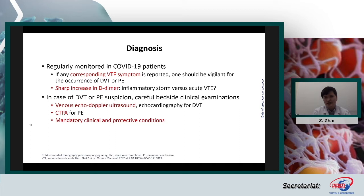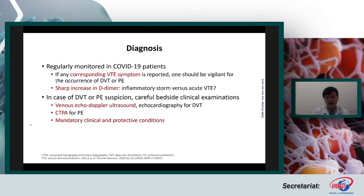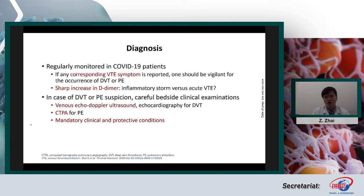Regular monitoring in COVID-19 patients is very important. If symptoms such as edema or shortness of breath occur, physicians should be vigilant for DVT and PE. If there is a sharp increase in D-dimer, we should try to find evidence of DVT and PE, though other phenomena such as inflammatory storm can also elevate D-dimer. In suspected DVT or PE, careful bedside clinical examination is very important. We can use echo-Doppler ultrasound to confirm DVT and CT pulmonary angiogram for PE diagnosis, considering the patient's clinical condition and protective resources.